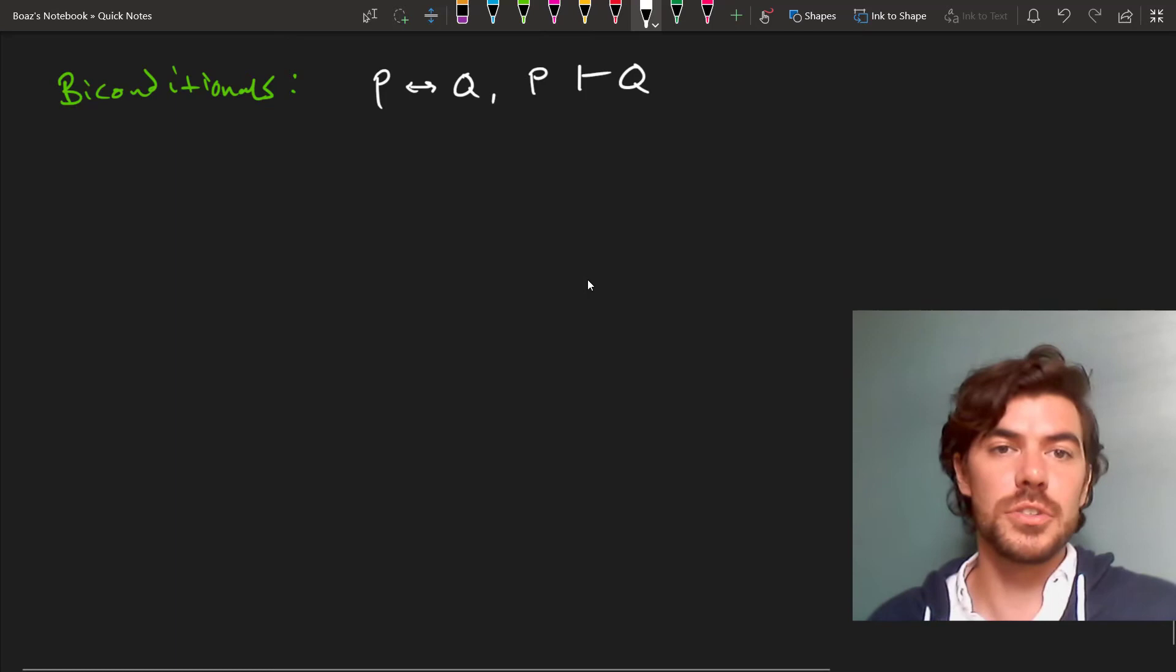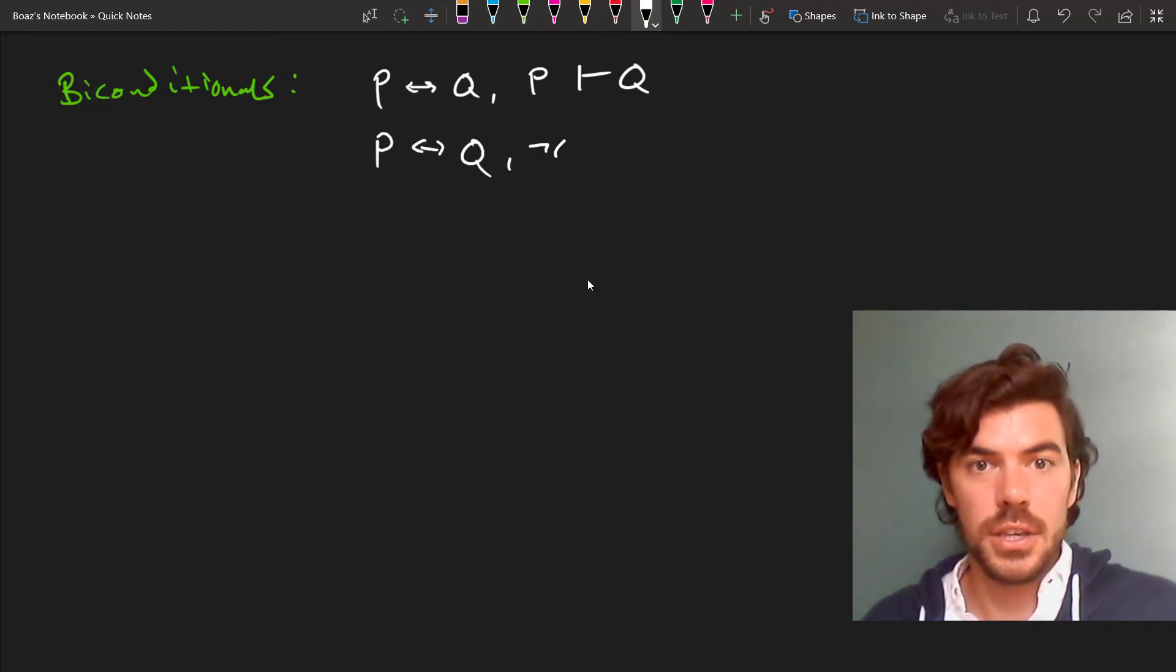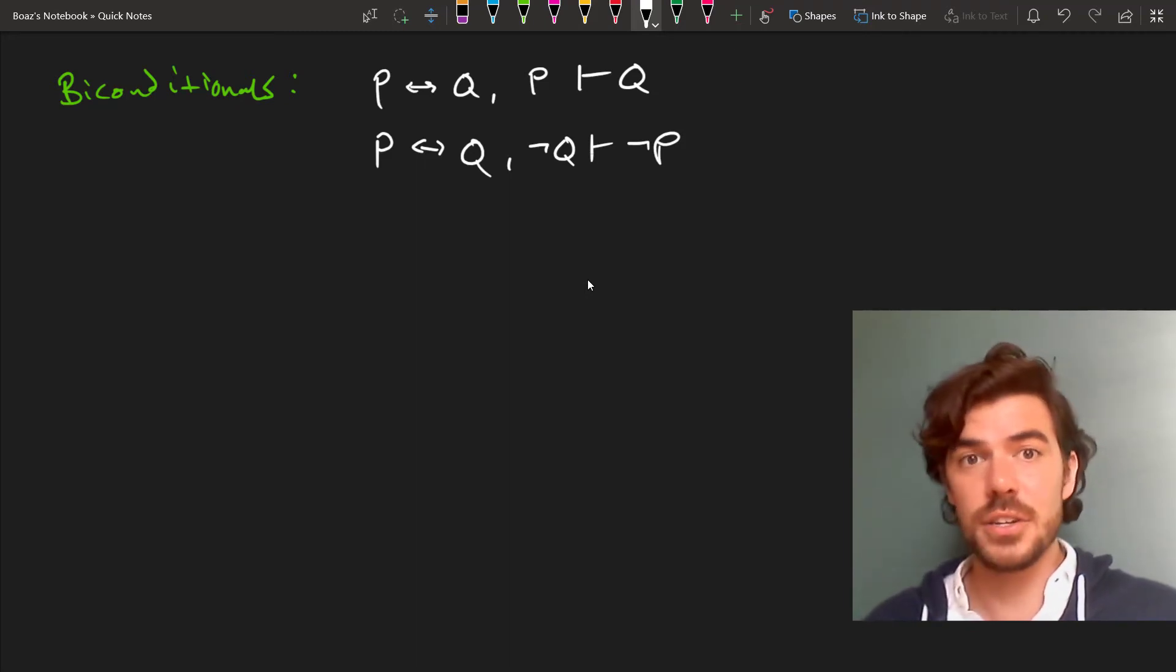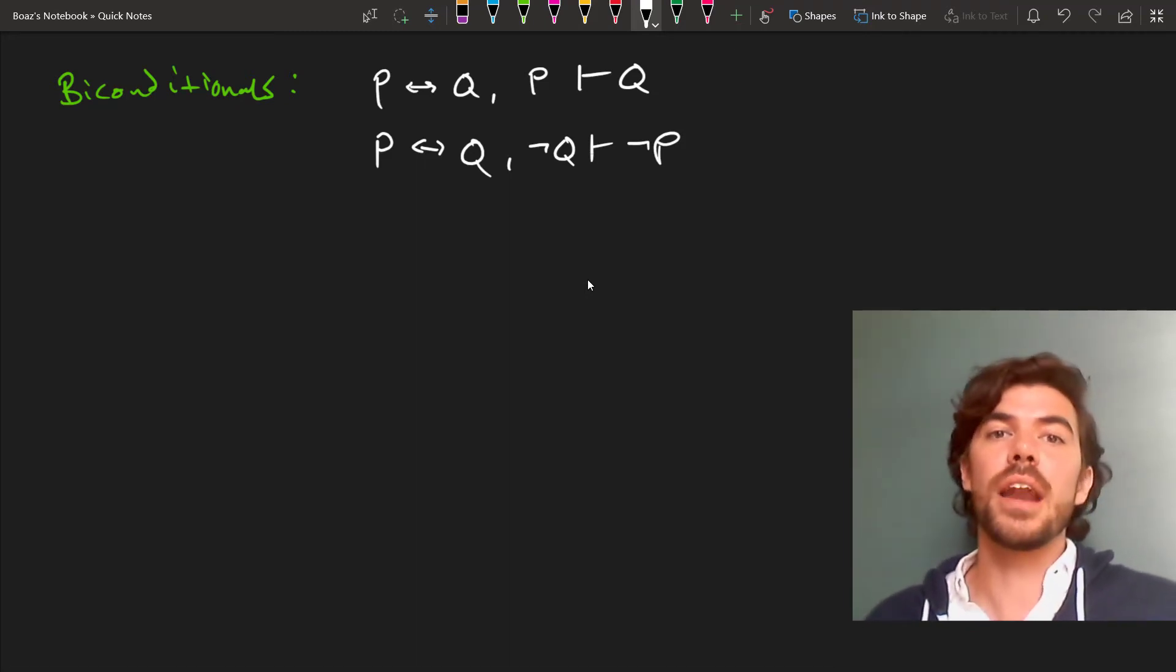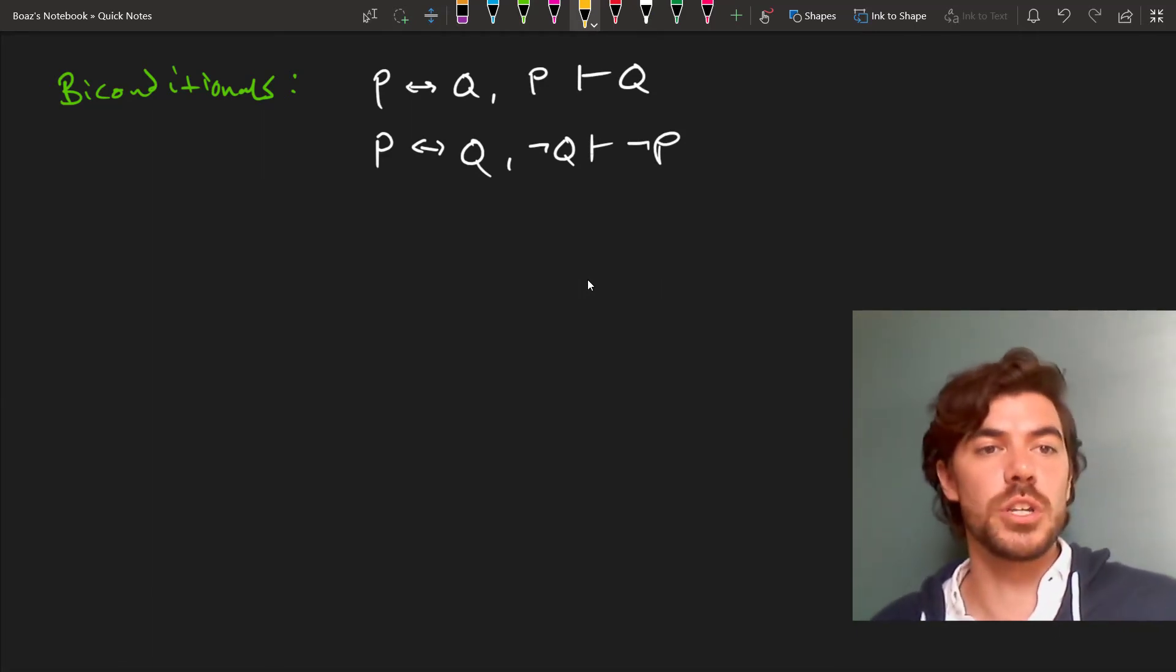Recall that by the rules for biconditionals, P if and only if Q and P does entail Q. And likewise, P if and only if Q and not Q does entail not P. So if we mistake a conditional for a biconditional, we're liable to make this error. And often this happens when we assert a conditional in a context in which we might be entitled to assert a biconditional.